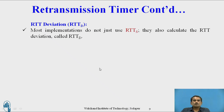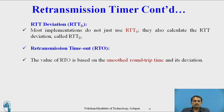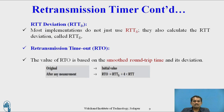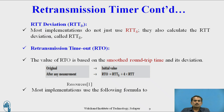For RTT deviation, most implementations do not just use RTTS; they also calculate the RTT deviation called RTT_D. First, we find RTTO and RTTS, then calculate RTT_D. The retransmission timeout RTTO is based on smooth round trip time and its deviation. After any measurement, the formula is: RTTO = RTTS + 4 × RTT_D. Most implementations use this formula to calculate the value of RTTO.